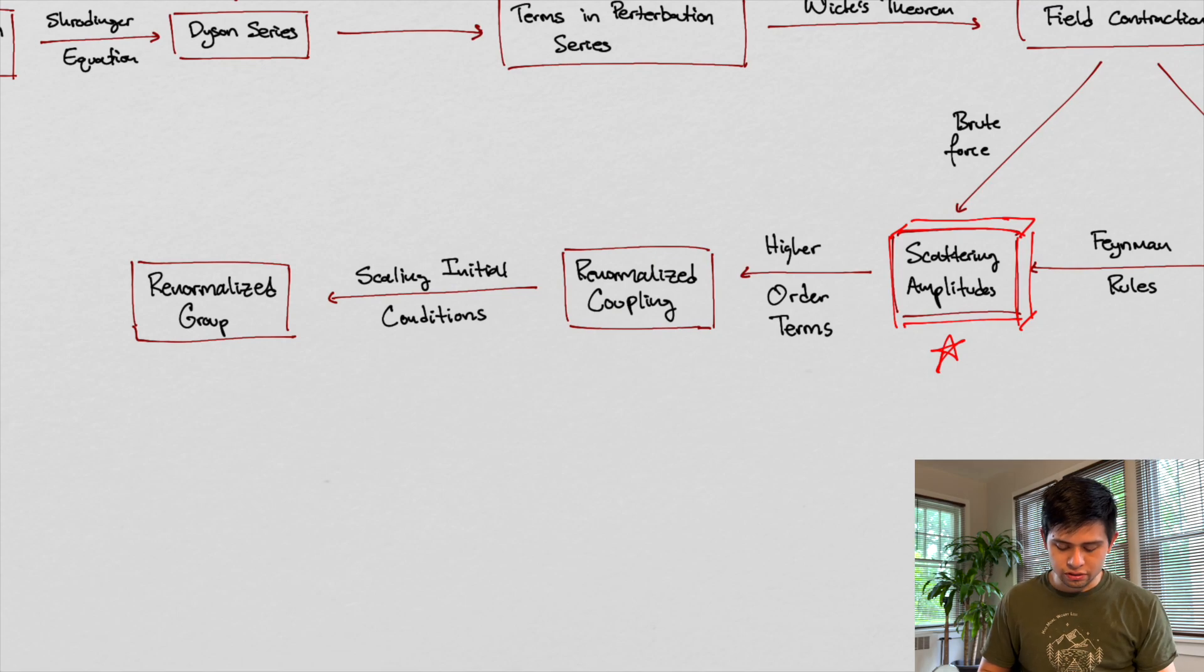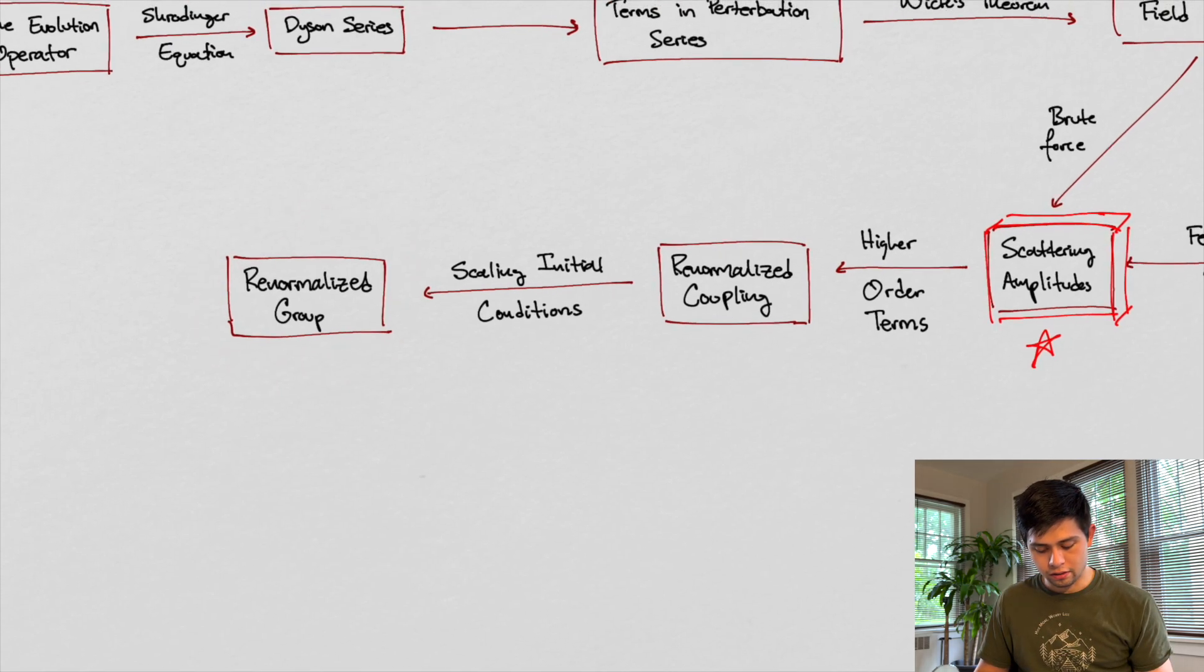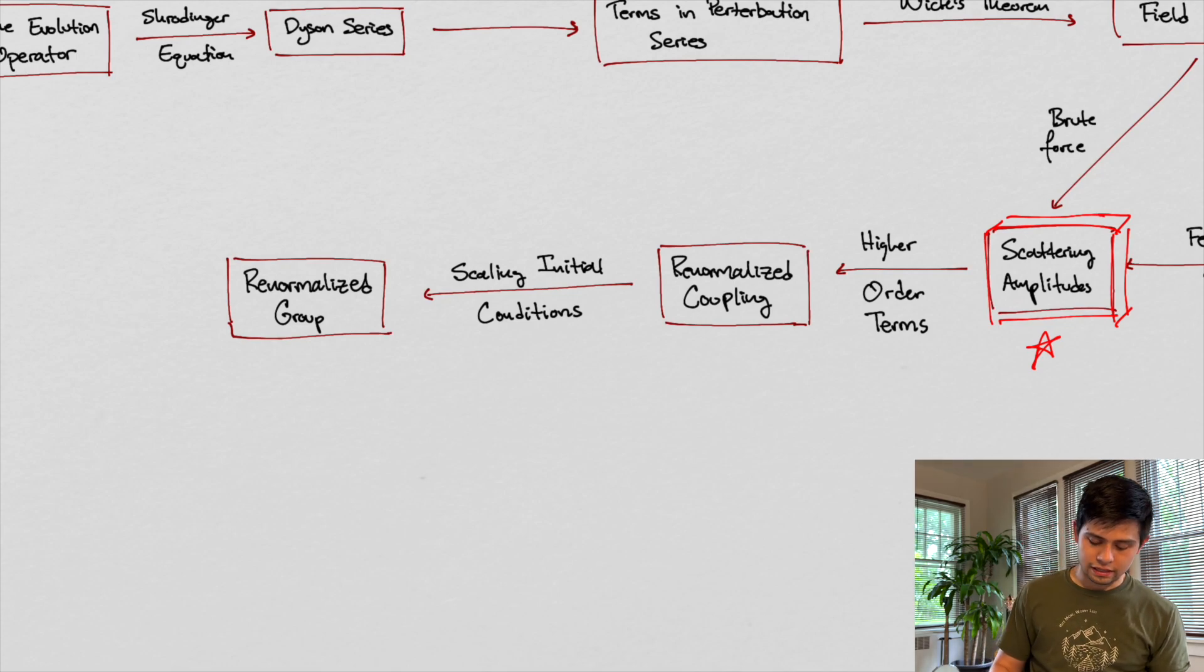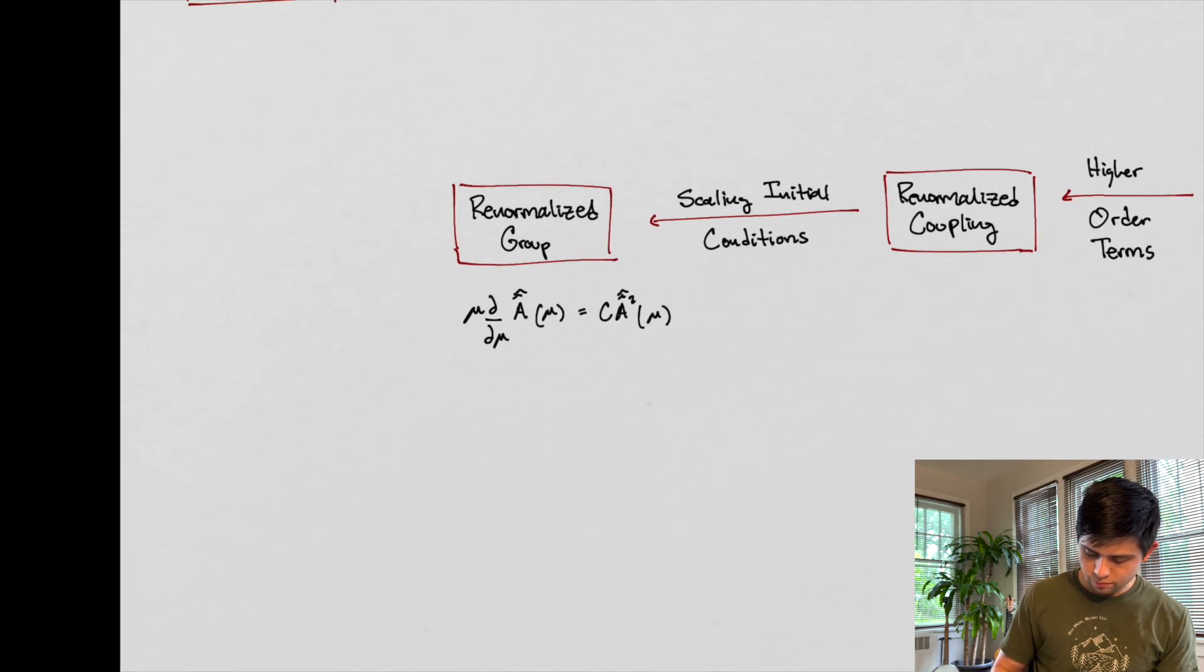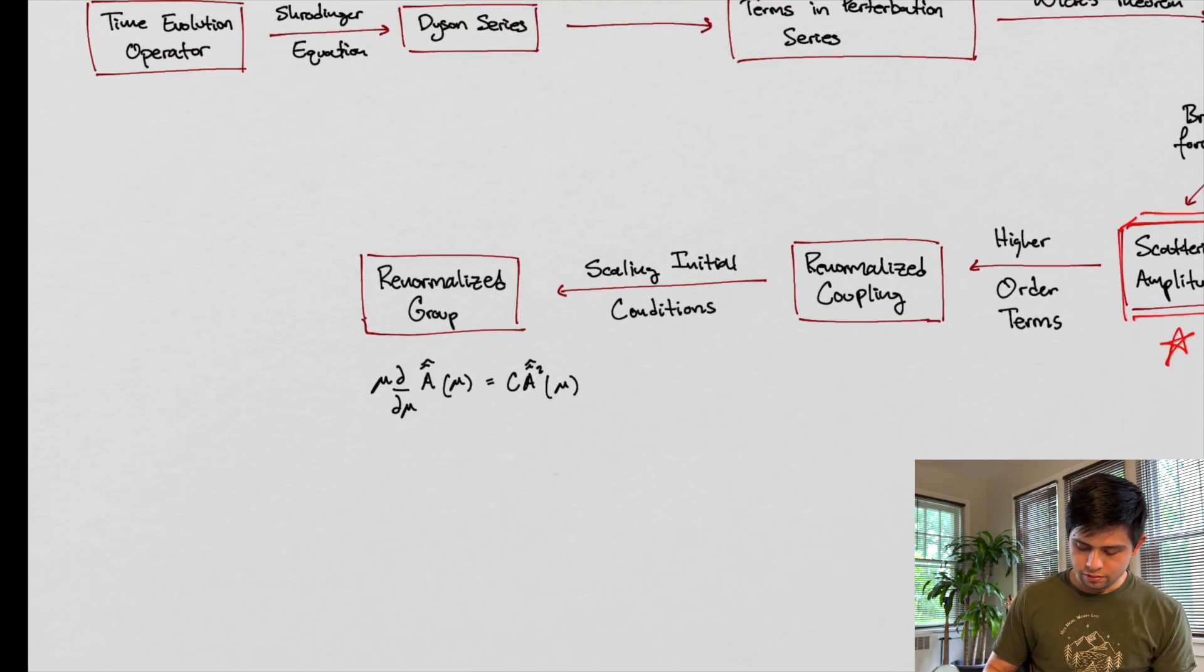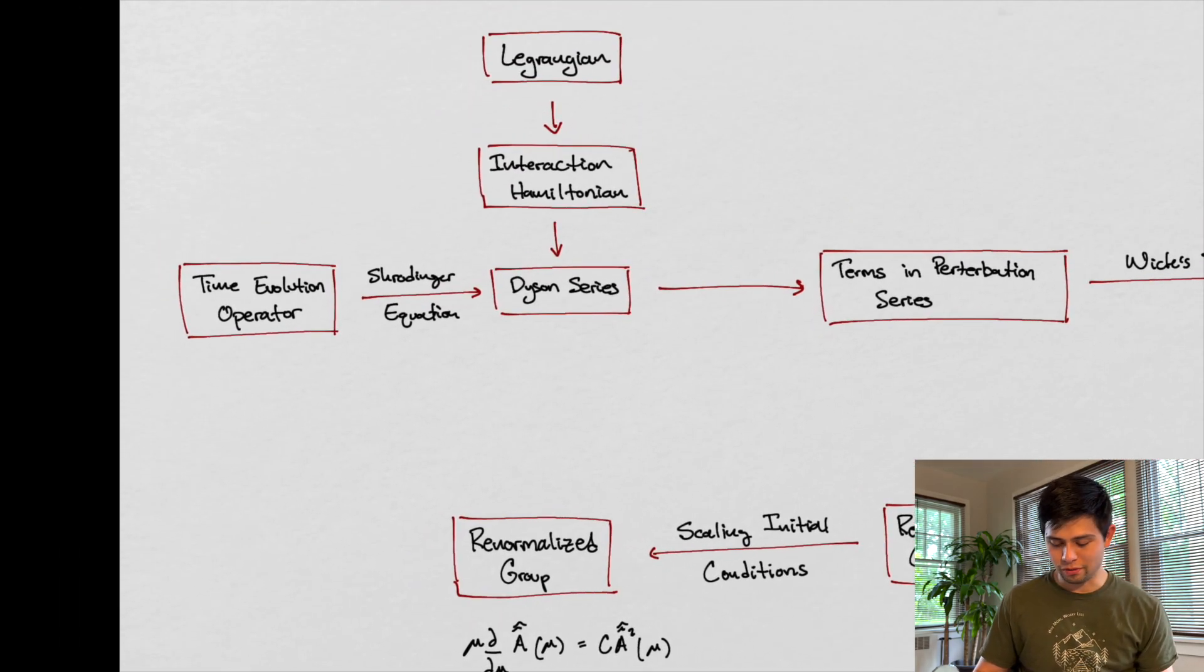And then when we consider initial scaling conditions, right? So the initial starting point, the two initial particles at some speed, some momentum coming together, we were then able to get the renormalized group equation, right? That was, if you recall, I'll write it down. This guy right here. Right. So there's a lot here, right? This is probably at least 20 videos worth of summary.